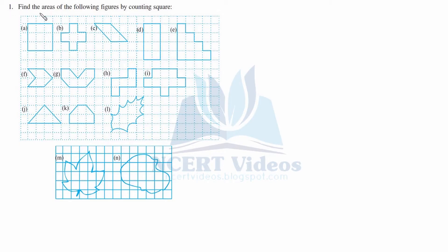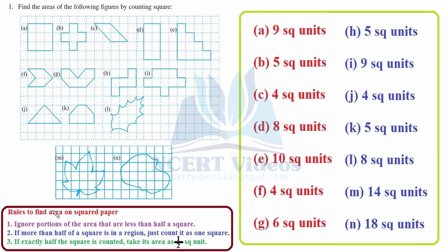Question 1: find the areas of the following figures by counting squares. We will find the areas of these figures plotted on a squared paper. The squared paper has both length and breadth equal, forming unit squares.